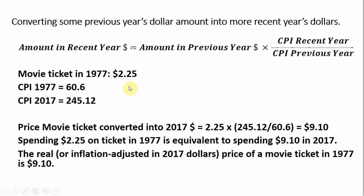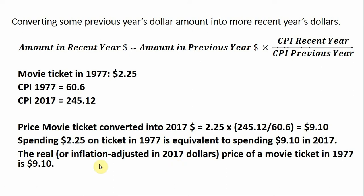So all I'm going to do is use my formula here. I'm going to plug $2.25 in as the amount in previous year dollars. I'm going to put 245.12 in the numerator — this is the most recent CPI — and then 60.6 in the denominator. Doing the math, the price of a movie ticket converted into 2017 dollars would be $9.10. So spending $2.25 on a ticket in 1977 would be equivalent to spending $9.10 in 2017.